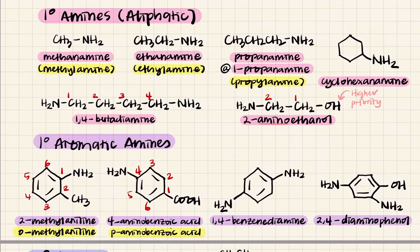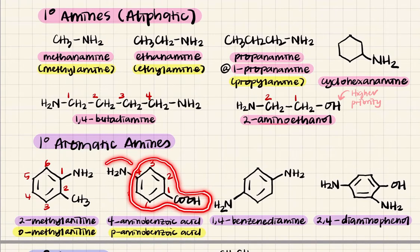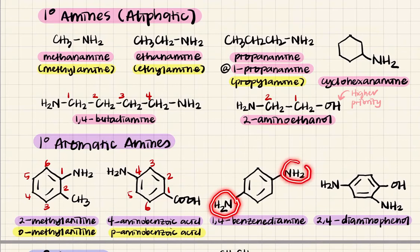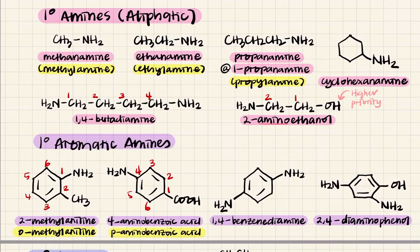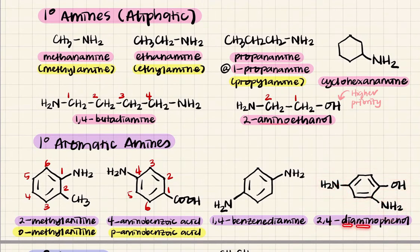For primary aromatic amines, look for the parent based on the priority of functional groups. Here you have aniline. With a methyl substituent at position 2, it becomes 2-methylaniline. If you have amino and carboxyl groups, carboxyl has higher priority, so the parent is benzoic acid — giving 4-aminobenzoic acid. If two amino groups are on the benzene ring, it is 1,4-benzenediamine. With alcohol and two amino groups, phenol is the parent: 2,4-diaminophenol.